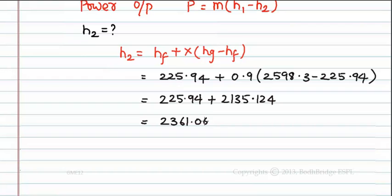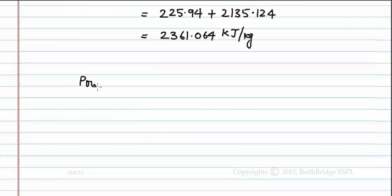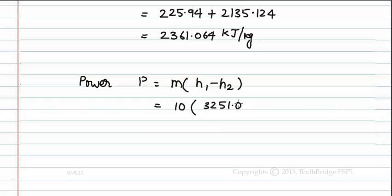So now power P = m(H1 - H2) = 10(3251.0 - 2361.064) = 8899.36 kW = 8.9 MW.